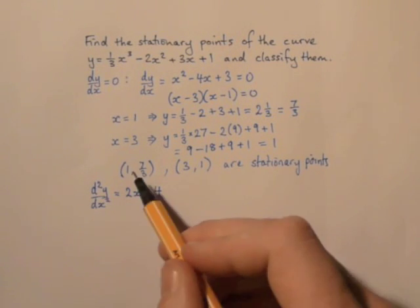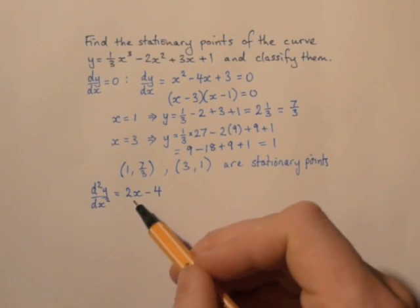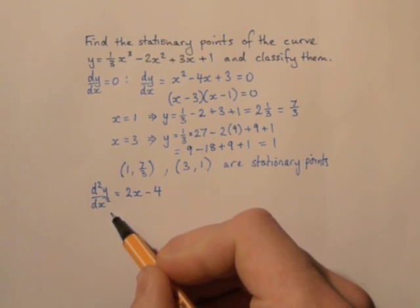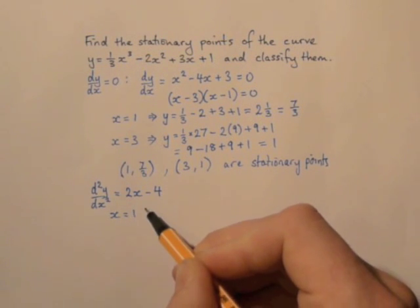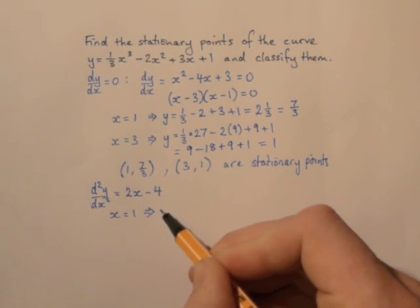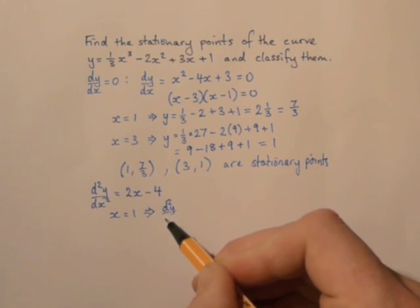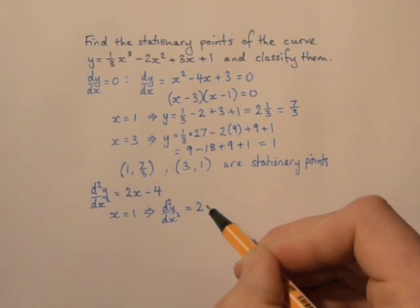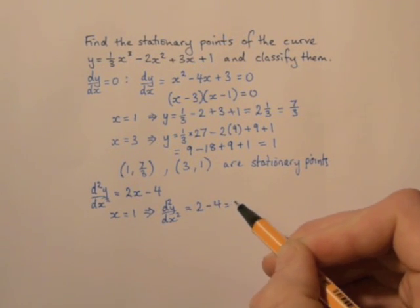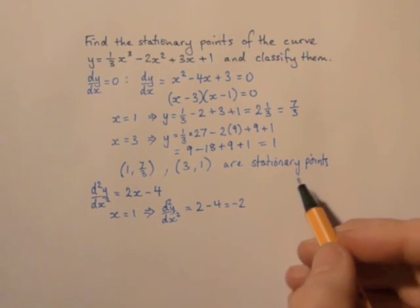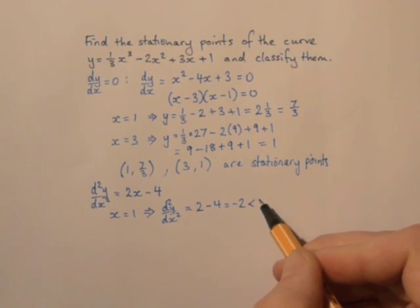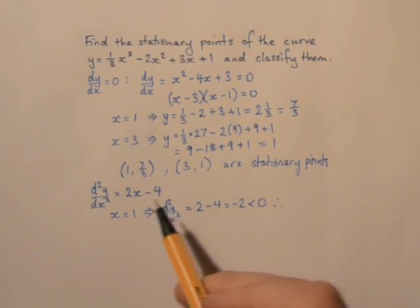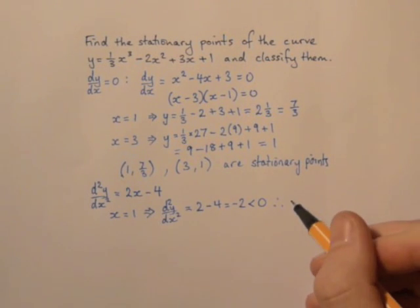We need to look at the value of this at the two stationary points by substituting in the two x values. So x equals one implies that the second derivative is two minus four, which is minus two. So it's less than zero, and that tells me that this stationary point is therefore a local maximum.